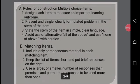Rules for construction - multiple choice items. Design each item to measure an important learning outcome. Present a single, clearly formulated problem in the stem of the item. State the stem in simple, clear language. Avoid use of alternatives like all of the above and use of none of the above with caution.